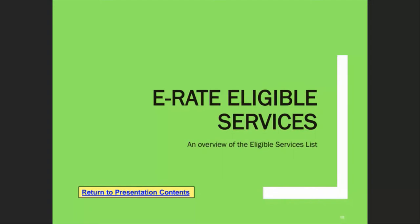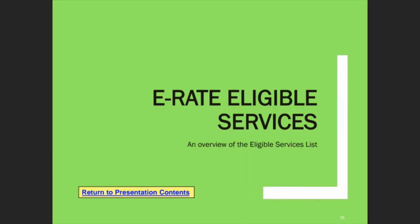Now that we know about the discounts, let's talk about what you can get discounts on. Every year, the Federal Communications Commission releases what they call the eligible services list, which specifies the specific services or types of equipment eligible for E-Rate support. You can go to the USAC website to see the most recent approved eligible services list. The FCC is often late on approving it, but it doesn't change substantially from year to year. The 2023 eligible services list is still in draft version.